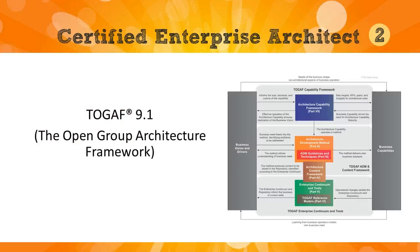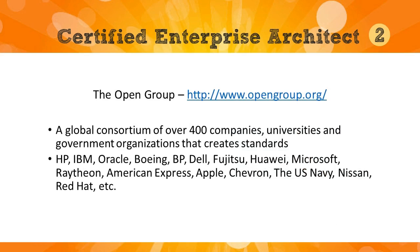The TOGAF standard is run by a consortium called the Open Group, and it's an abbreviation for the Open Group Architecture Framework. You can find all of the documents on their website at opengroup.org. The Open Group is a collection of over 400 companies, universities, and governments that came together to create and work on this standard. The TOGAF standard itself has a long history, starting with the U.S. Department of Defense over 30 years ago, and has since been turned over to the standards body called Open Group and developed to where it is today.